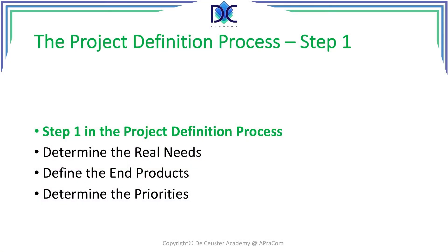In the previous session I defined the process to define the project. We saw that it contains three steps. In the following session I will look into each step in more detail. In the first step we are going to look at how to determine the real needs, to define the end product or products, and finally to determine the priorities that drive the project.